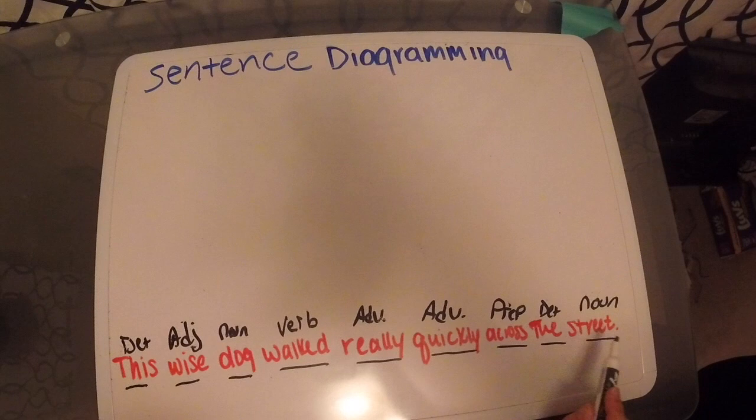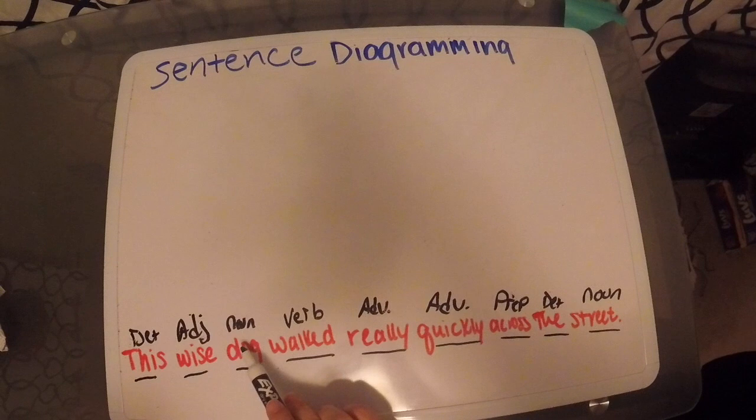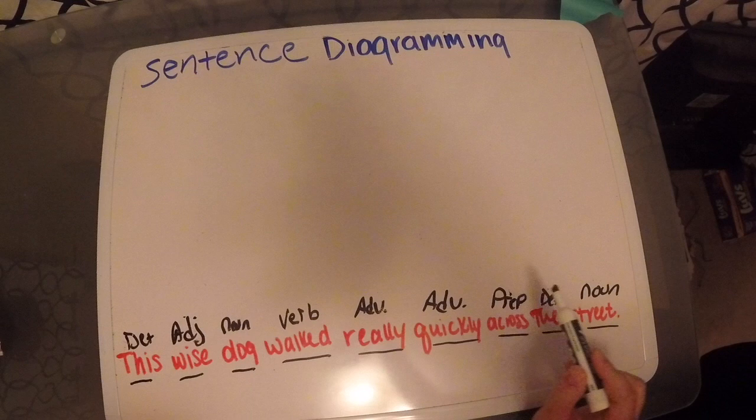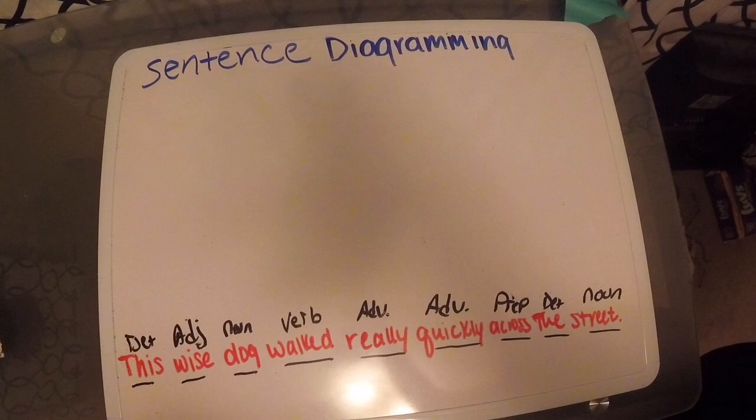We have our determiner this, our adjective wise, our noun dog, our verb walked, really and quickly are our adverbs, across is our preposition, the street is our determiner and our noun.